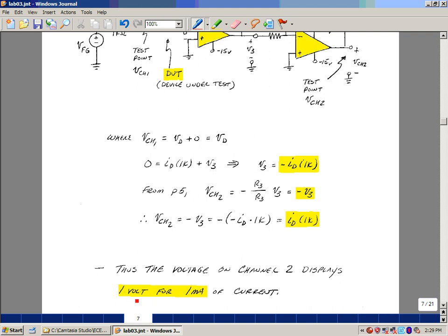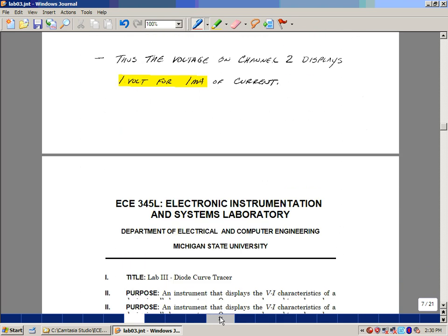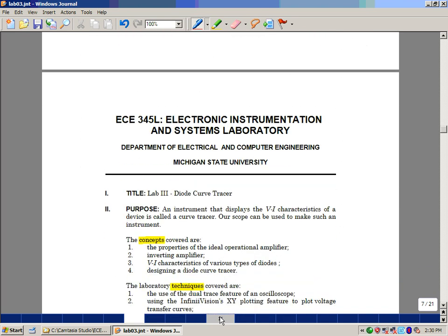So for a one volt output, we're looking at a one milliamp change in current.